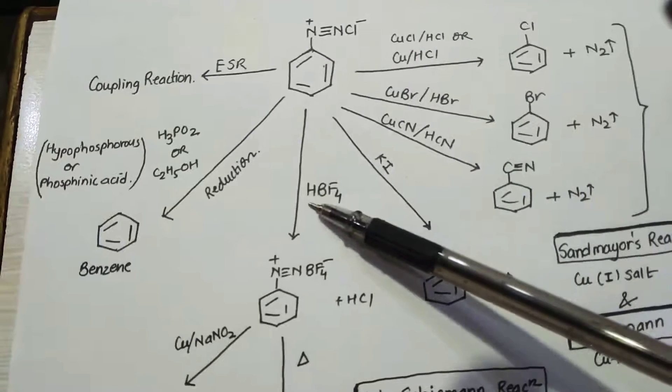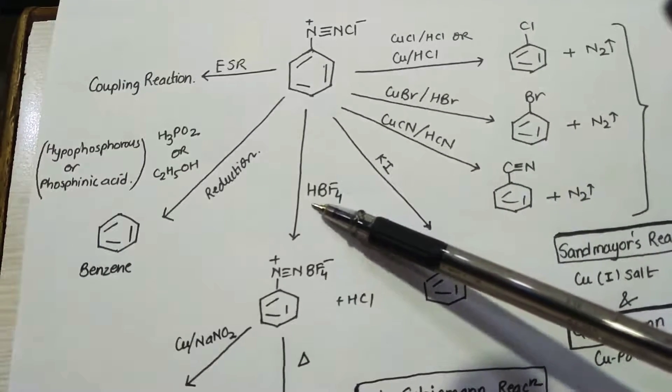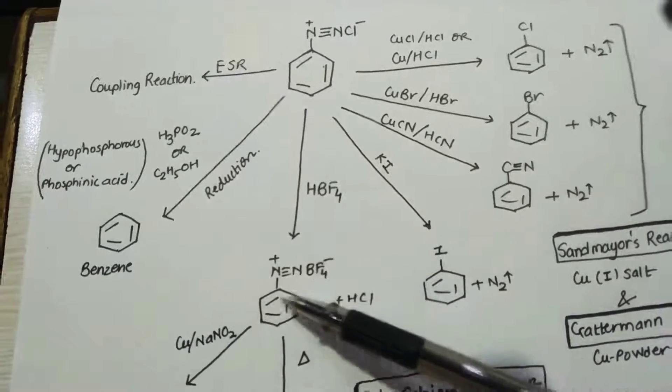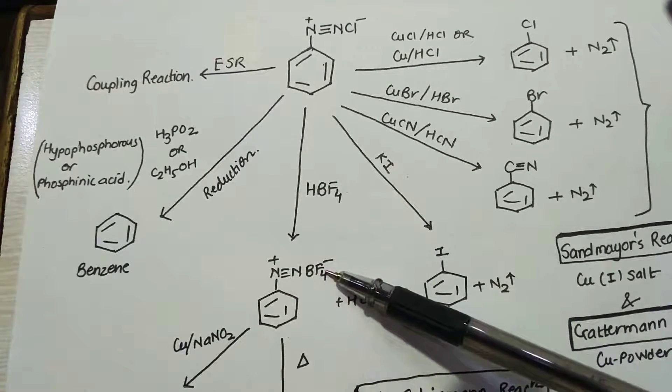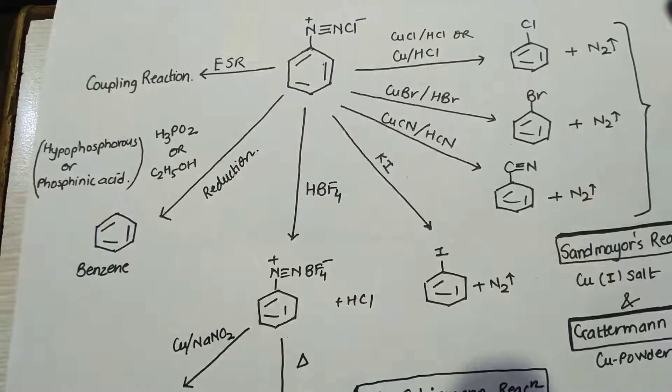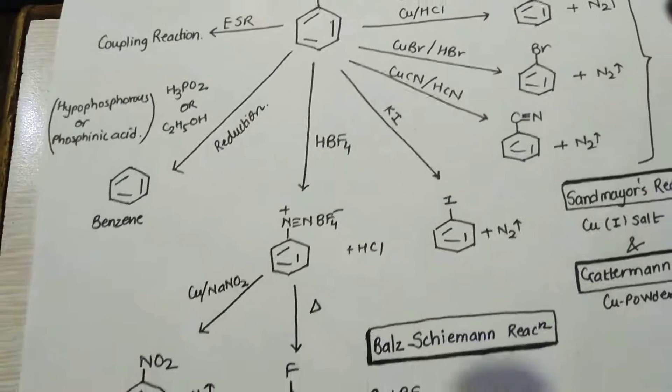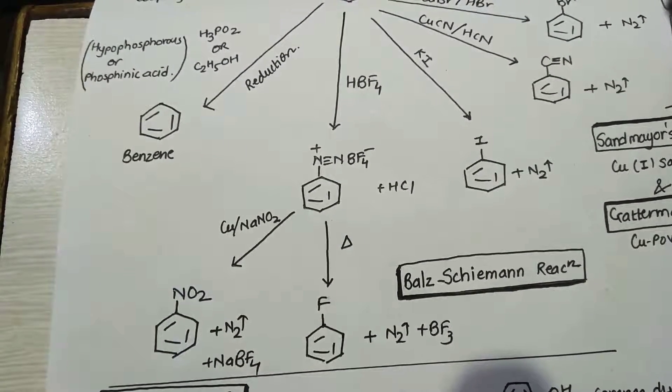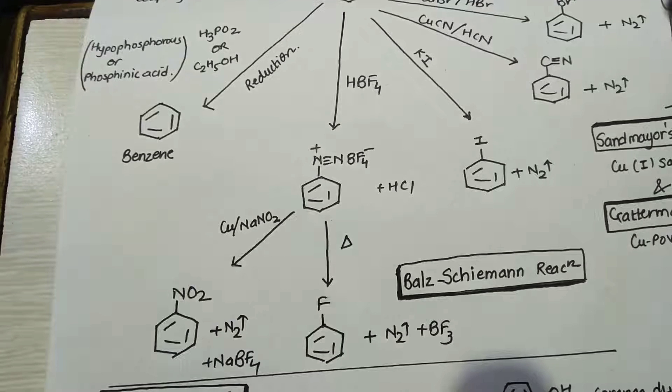Diazonium fluoride, we first treat with HBF4, that is fluoroboric acid. This will give benzene diazonium fluoroborate, which is a stable compound. If you heat it at high temperature, it will decompose and it will give you fluorobenzene. And this reaction is called Balz-Schiemann reaction.